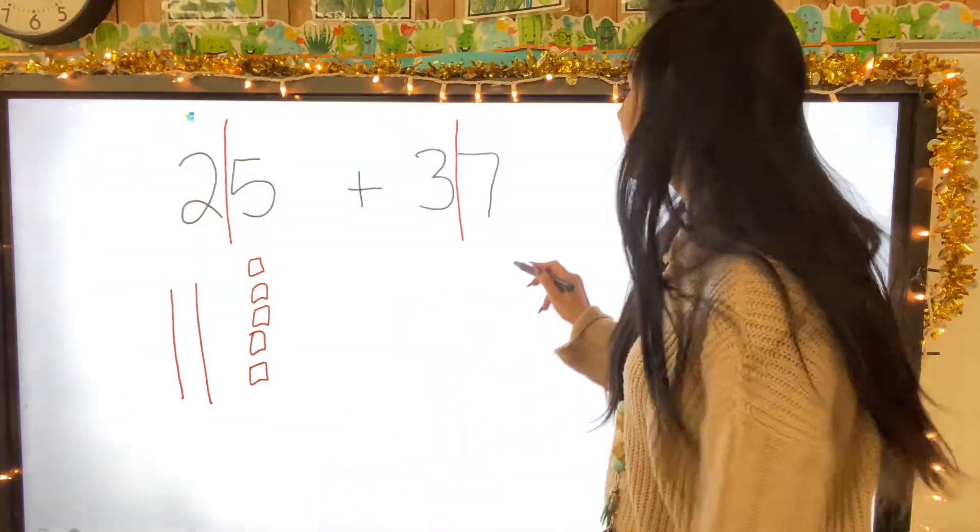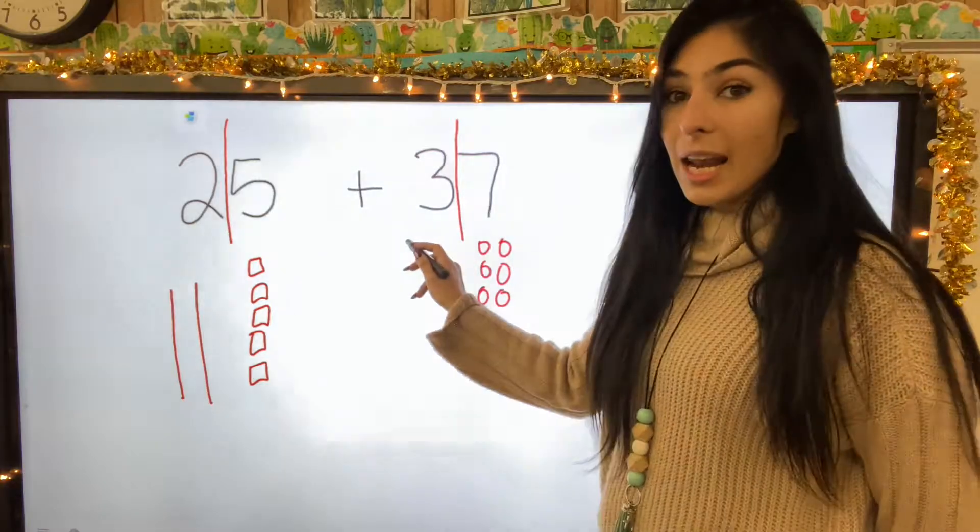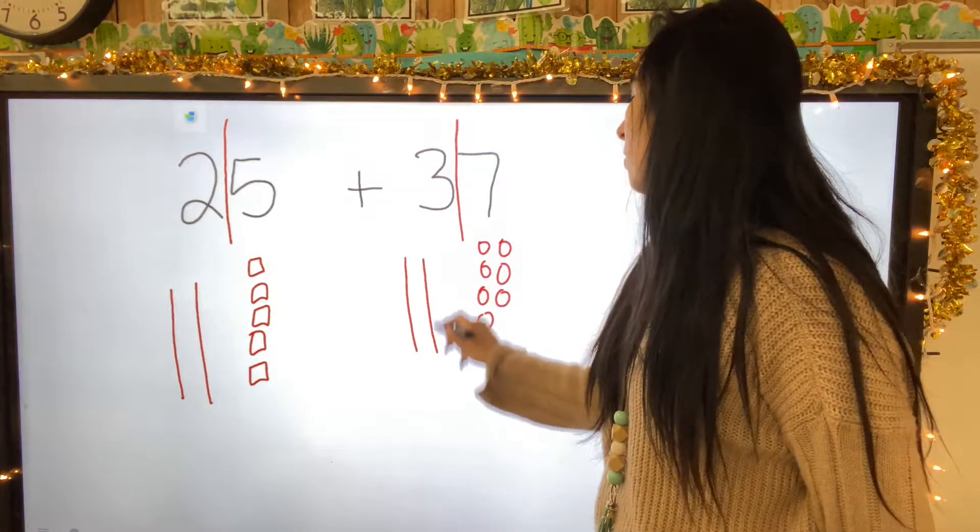Next, come over to 37. Always start with your ones. One, two, three, four, five, six, seven. And I have three tens: ten, twenty, thirty.